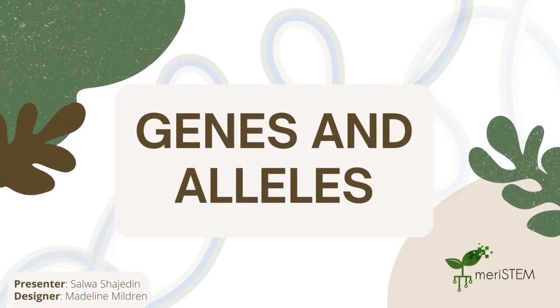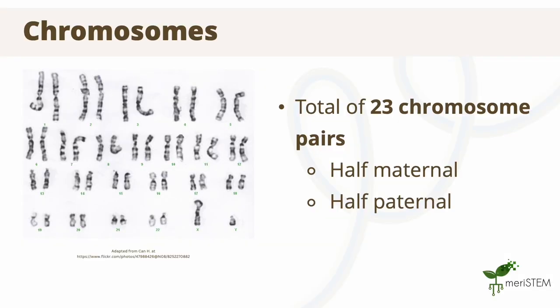We know that DNA is the material that codes for traits, but let's look at this in a little bit more detail. You may recall that chromosomes exist in pairs, and in humans we have a total of 23 chromosome pairs. Half of these chromosomes are inherited from your mother and the other half from your father.